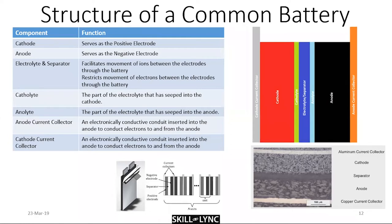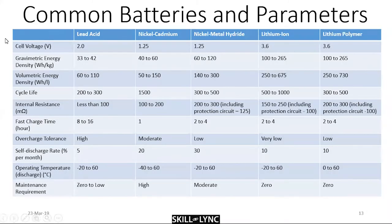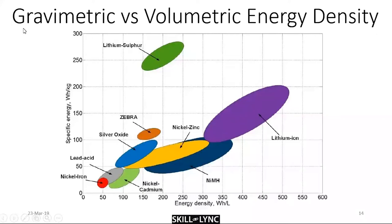There are many battery parameters on which the choice of using a particular battery system for a particular application is based. I've shown these different parameters for common battery systems that everybody would have seen at some point. The NiCad system used to be pretty good until lithium-ion came along and took its place. Nickel metal hydride is still being used — it's a good system, but there are some challenges. This shows the comparison of gravimetric versus volumetric energy densities for different kinds of batteries.